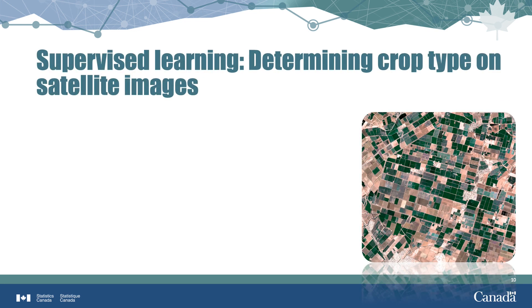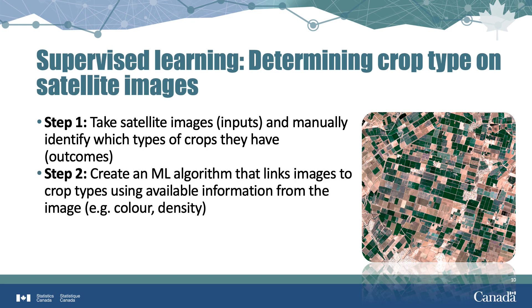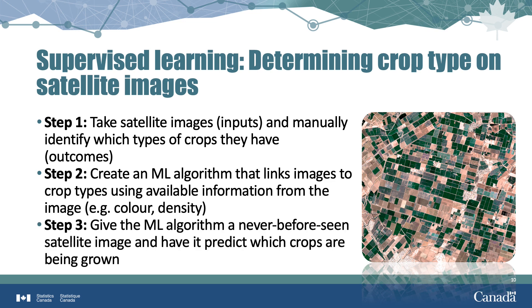Here we see an example of using supervised machine learning to predict crop type in satellite images. On the right-hand side, you see an actual satellite image of farmers' fields — this is the input. The first step is to identify what portions of the image are crops versus something else, such as roads, water, fences, or trees, and then to identify each different type of crop. These are the outcomes, and this first step has to be done by a person. The second step is to create a machine learning algorithm that reads in the satellite image and the correct label for what's in every spot of the image. From this, the algorithm learns to identify crops by how they appear on the image, for example by color and density. Finally, the algorithm reads an image it's never seen before and tries to predict which crops are there based on what it learned.